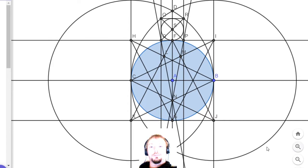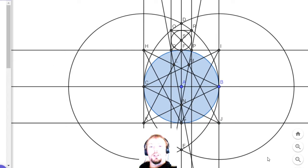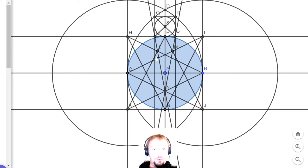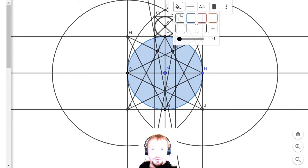We now have a diagram of the earth and the moon. And I'm going to now just put some color into it. Maybe I'll just darken it a bit like so.